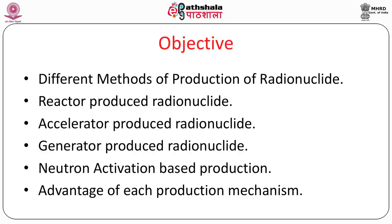Nuclear medicine is today one of the important imaging modalities, as compared to other imaging modalities present in our country like X-rays, CT, and MRI. In nuclear medicine, we use radionuclides which are labelled with different compounds. There are three important ways in which radionuclides are produced: reactor produced, accelerator produced, and generator produced.